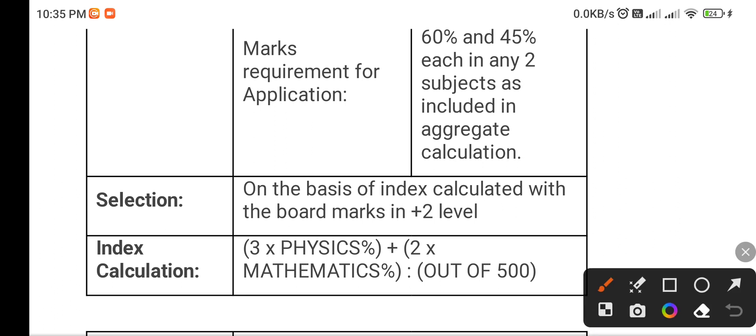So if you want to calculate then simply you have to convert the percentage marks. Physics percentage, how much you are getting. Three multiplied by the Physics plus two multiplied by the Mathematics percentage. So if you have good marks in Physics, then you have an advantage. And out of 500, you have to calculate the index marking.